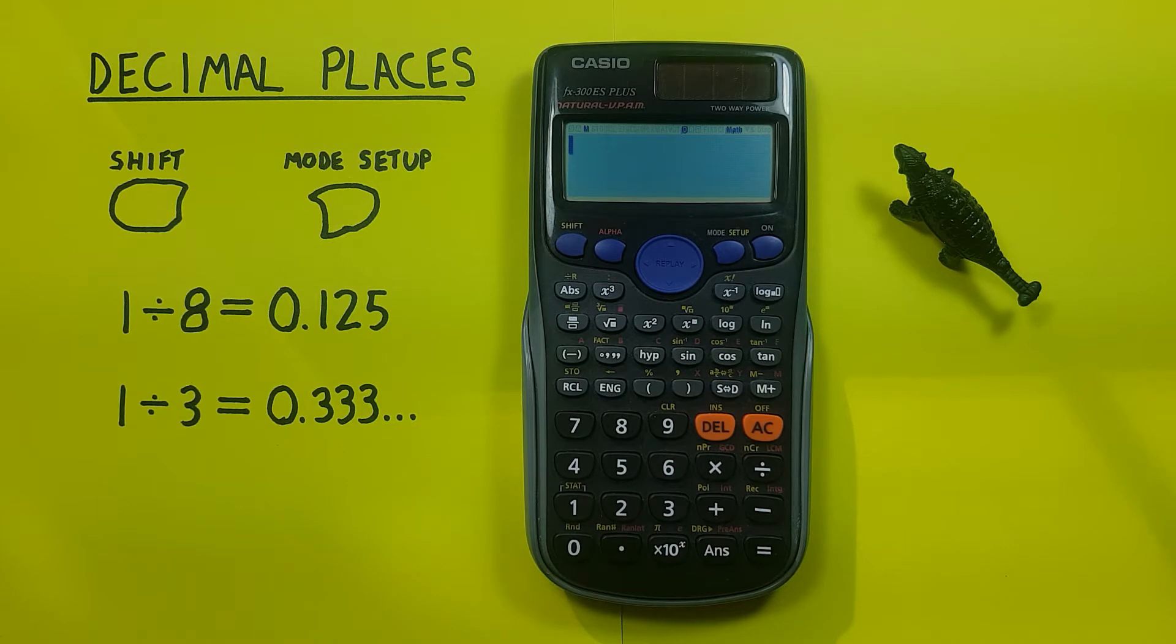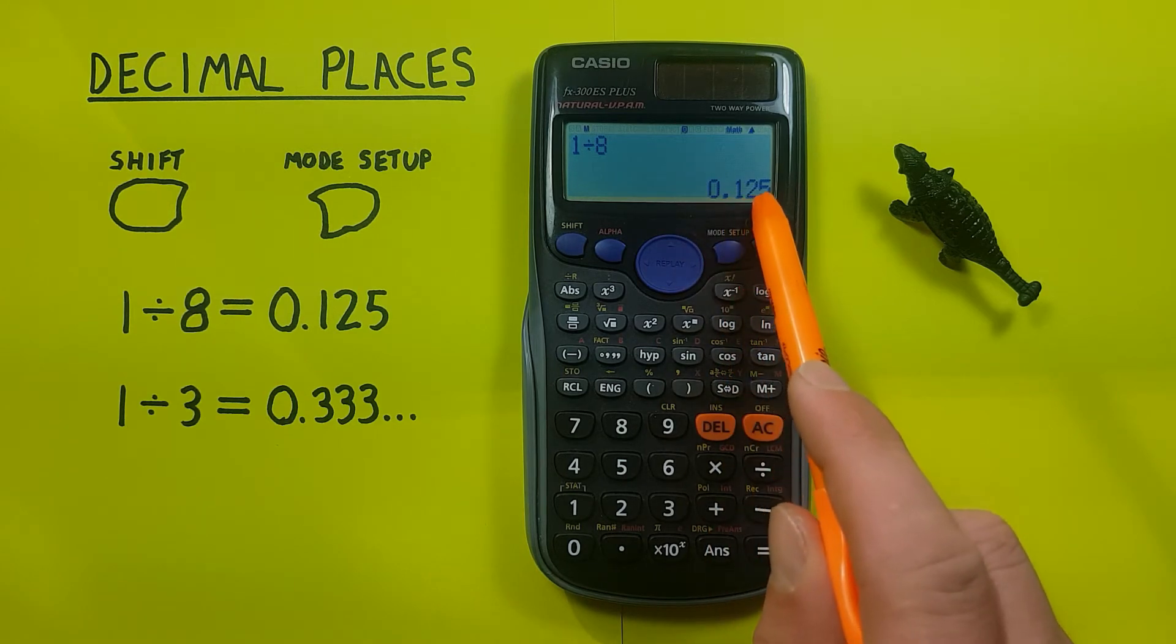So for example if we do 1 divided by 8, normally this calculator gives us a fraction, but if we convert that to a decimal we see we get 0.125.